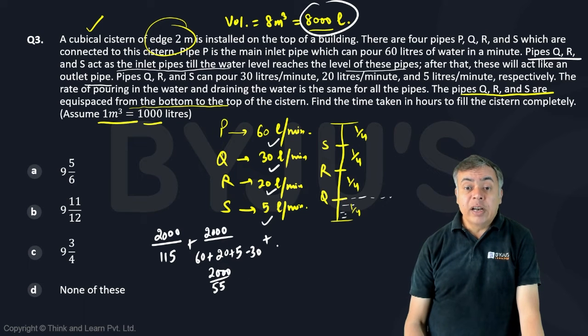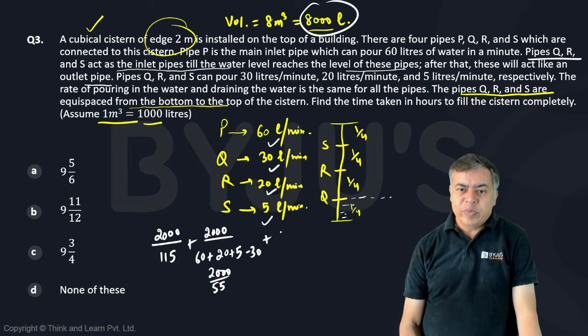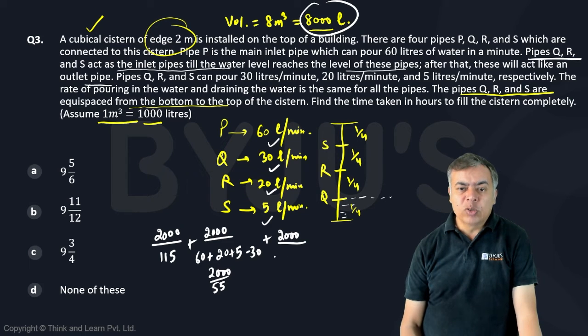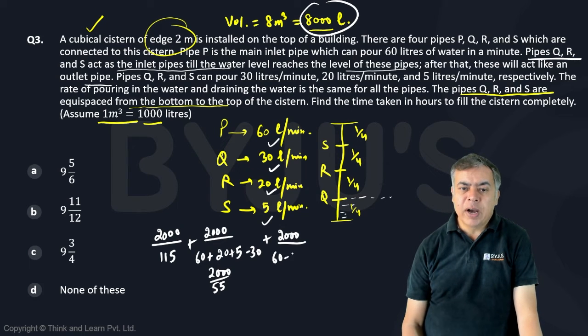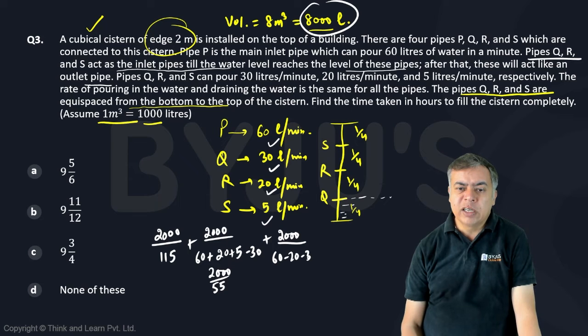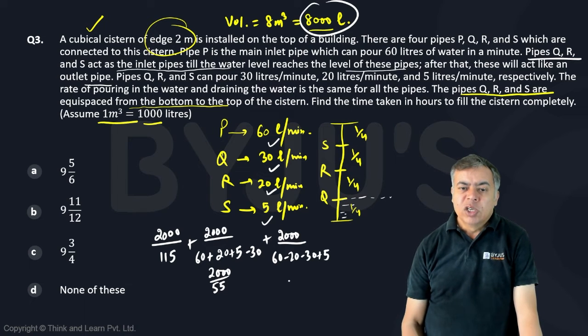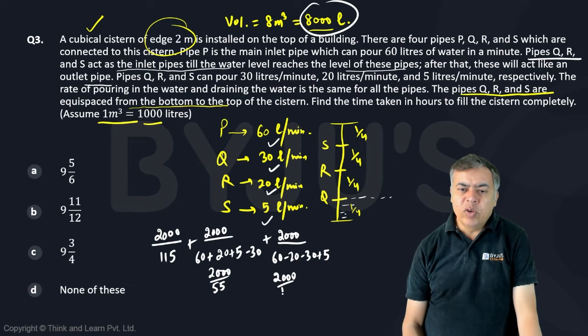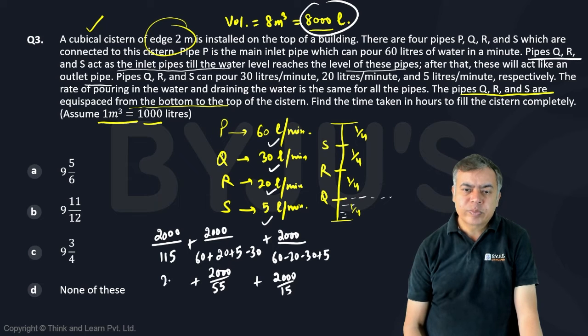After reaching level R, it will become, the next quarter will be 2000 by 60 minus 20 minus 30 plus 5. So it is only 60 minus 50, 10, 15. So now, now it will be only 15, 2000 by 15 time it will take.